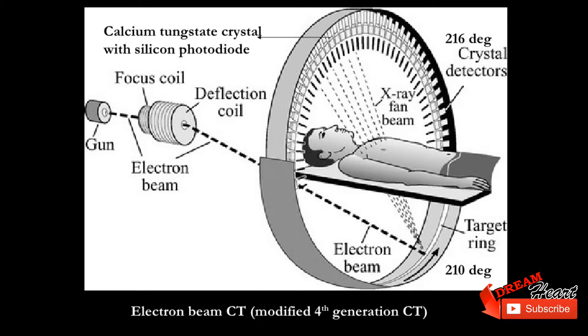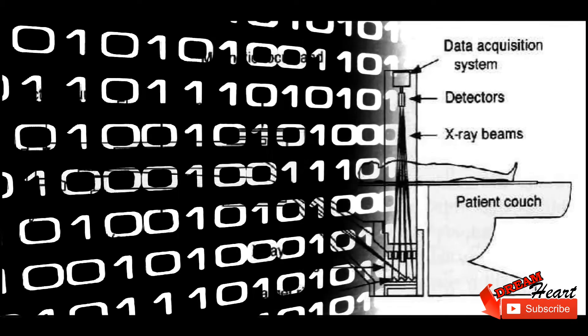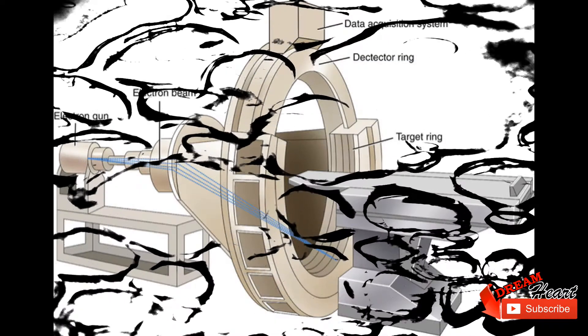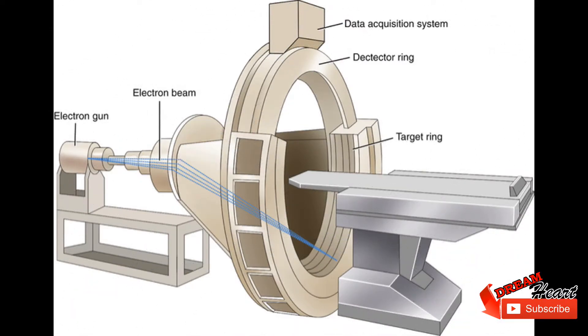Electron beam computed tomography, or EBCT, was introduced in the early 1980s by medical physicist Andrew Castanini. It is a method of improving the temporal resolution of CT scanners. Because the x-ray source has to rotate by over 180 degrees in order to capture an image, the technique is inherently unable to capture dynamic events or movements that are quicker than the rotation time.